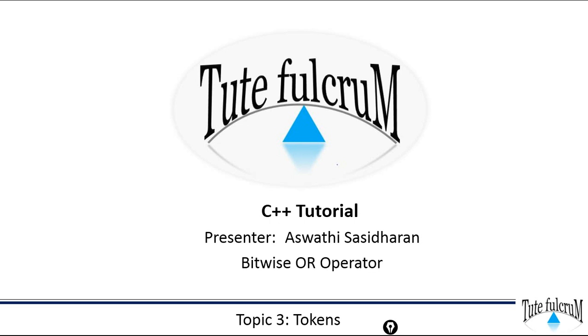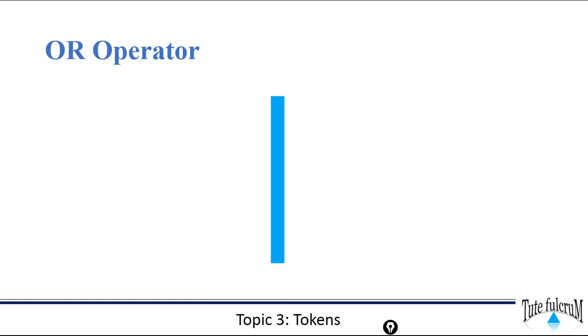Hi all, welcome back to C++ tutorial on Tewed Filgrim. This session is on bitwise OR operator. The bitwise OR operator takes two numbers as operands and does OR on every bit of two numbers. The result of OR is 1 if any of the two bits is 1.